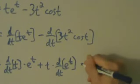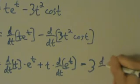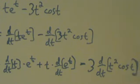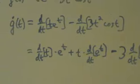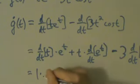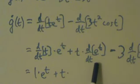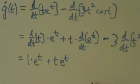With the second term, minus 3 is just a constant, so let's go ahead and pull that out: minus 3 times d/dt of t squared cosine t. Now d/dt of t with respect to t is just 1, so this is 1 times e to the t. And then plus t times the derivative of e to the t, which is just e to the t — so that's t times e to the t.